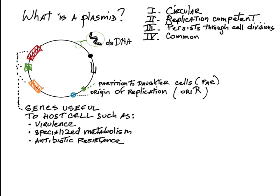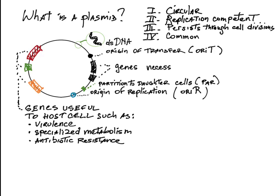Some plasmids have another important locus: an origin of transfer, ORI-T, and connected fertility genes.